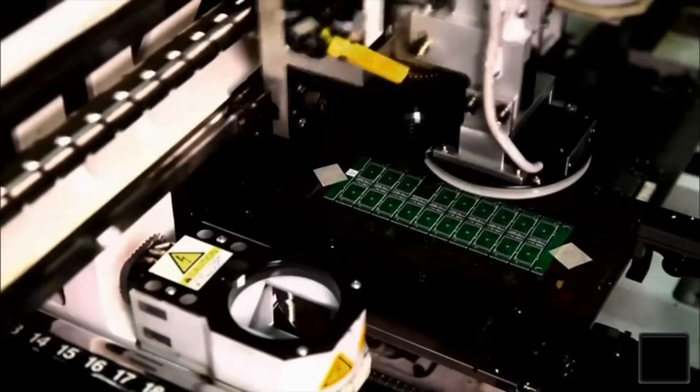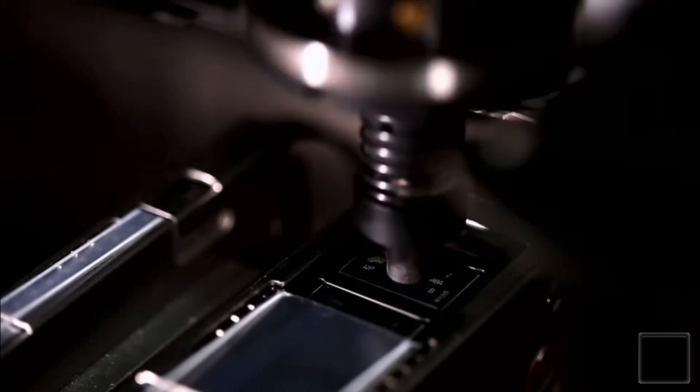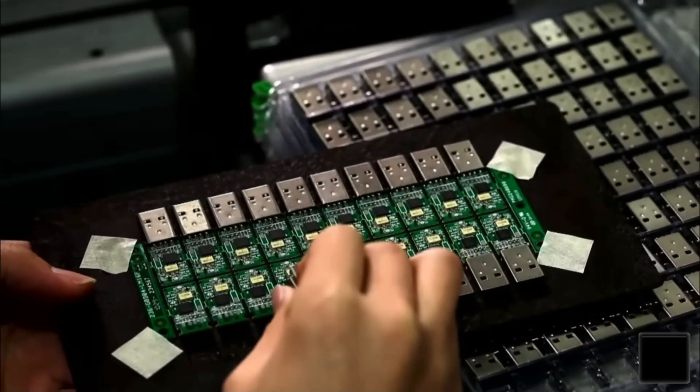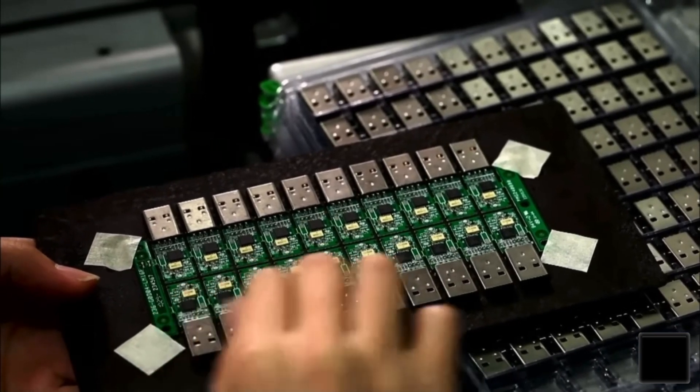On the flash drive assembly line, much the same process. A robot puts 20 lead frames on 20 circuit boards. Then a worker positions 20 USB connectors, which a soldering machine bonds to the boards.